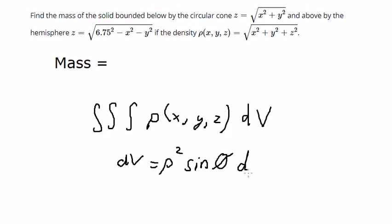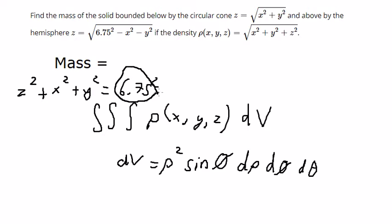About this one, we need to find the boundary of ρ. We know that 6.75² minus x² minus y². We put the square on both sides and got z² + x² + y² = 6.75². And 6.75 is about the radius of ρ.